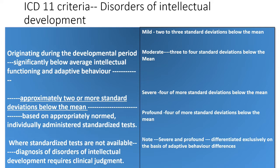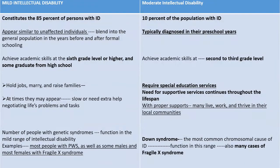In ICD-11, the disorder is defined as 'disorders of intellectual development' originating during the developmental period, with intellectual functioning and adaptive behavior approximately two or more standard deviations below the mean on standardized tests. Where standardized tests are not available, clinical judgment is required. For mild, it is two to three standard deviations below the mean; moderate, three to four; severe and profound are four or more standard deviations below the mean. Severe and profound are differentiated mainly on the basis of adaptive behavior differences.